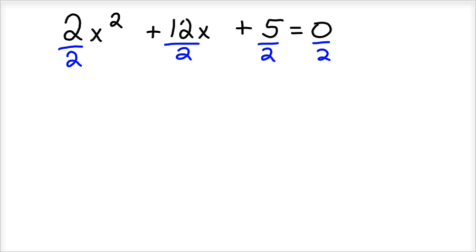Well, to make that a 1, you just divide everything by 2 all the way across. Even the 0. And when you divide 0 by 2, again, it's still 0. And so you've got x squared plus 6x plus 5 halves. Now we can do the, equals 0. Now we can do the process of completing the square.